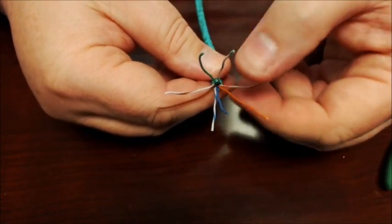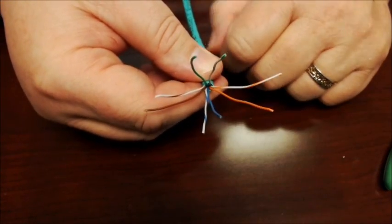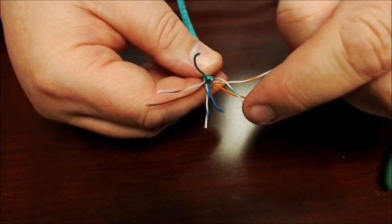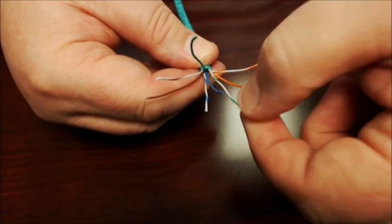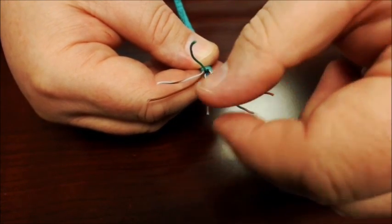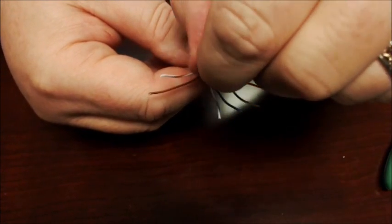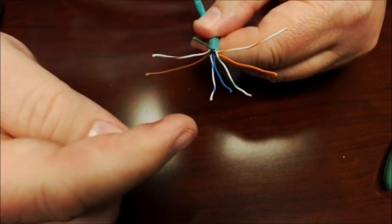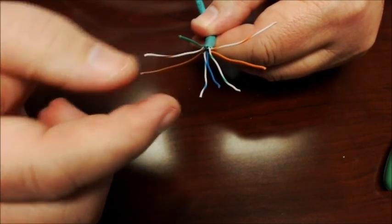Okay, now the difference is going to be the green wire. So I'll undo it last. The green wire is split. The green white goes down between the orange and the blue, and the solid green goes down between the blue white and the brown white.